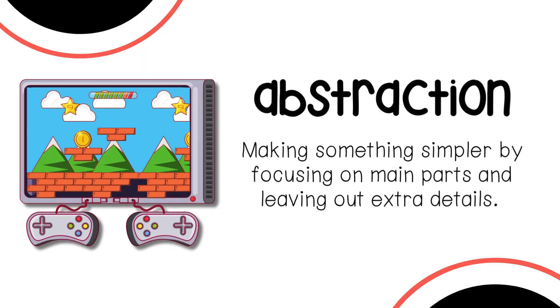Our first word is abstraction. Making something simpler by focusing on main parts and leaving out extra details. When you play a game, you press a button and a character moves. You don't need to know all the code behind that movement. You just know pressing the button makes it happen. Abstraction in coding is about focusing on what we need to use and not on every detail of how it works.